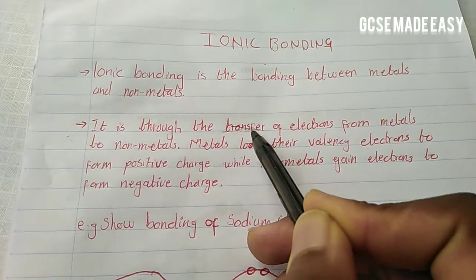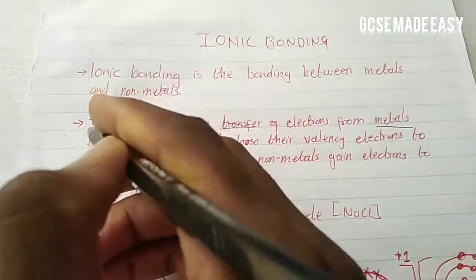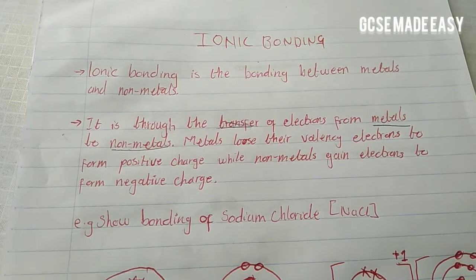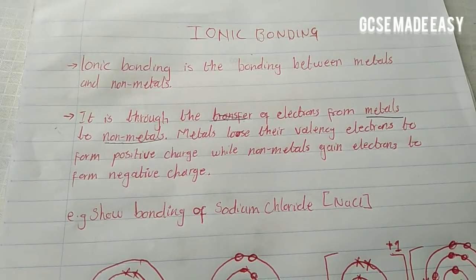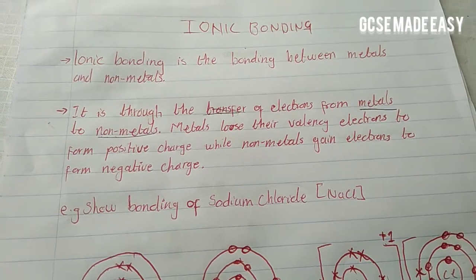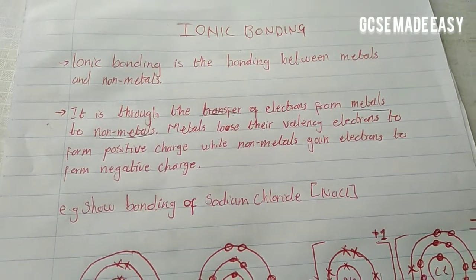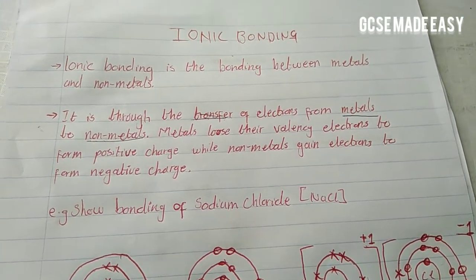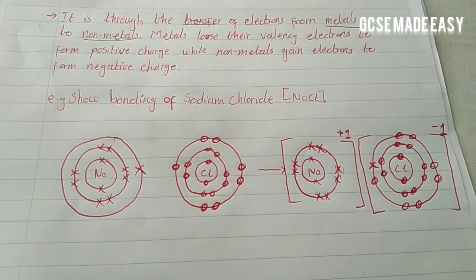This bonding takes place through the transfer of electrons from metals to nonmetals. It is when metals lose their valence electrons to form a positively charged ion, and the nonmetals gain the electrons which have been lost by the metals to form a negatively charged ion.